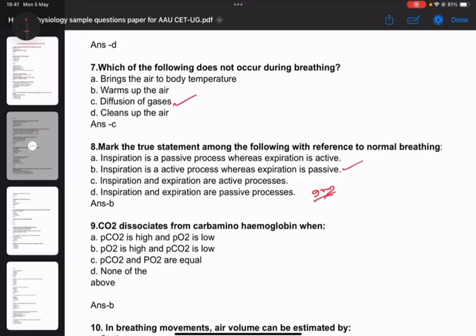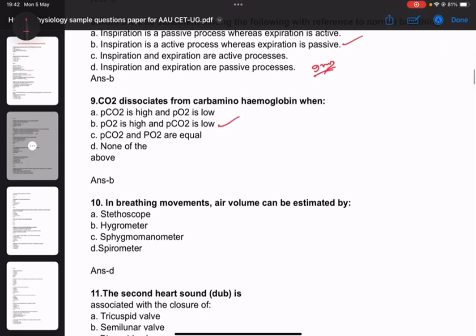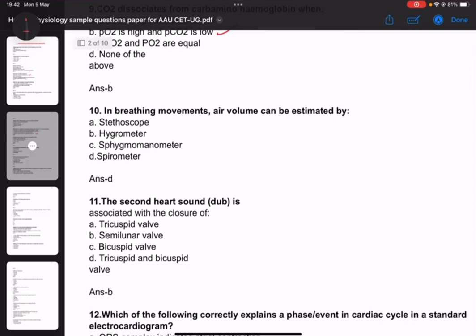Question nine: CO2 dissociation from carbaminohemoglobin. Question ten: During breathing, air volume can be estimated by spirometer - this is an important and common question in exams.